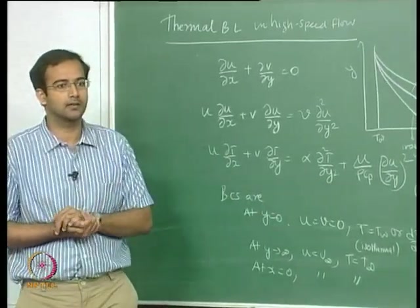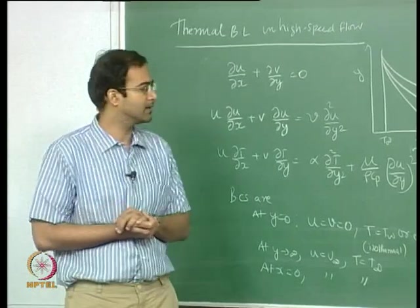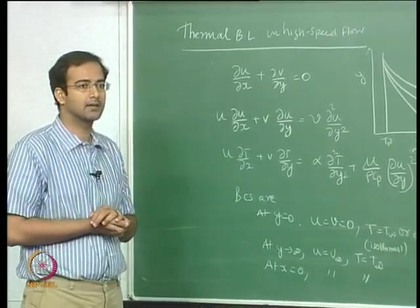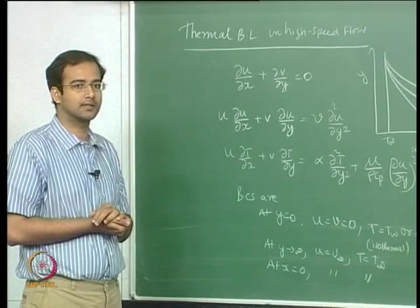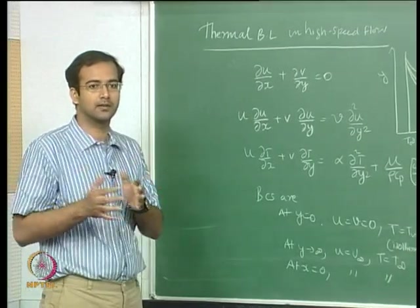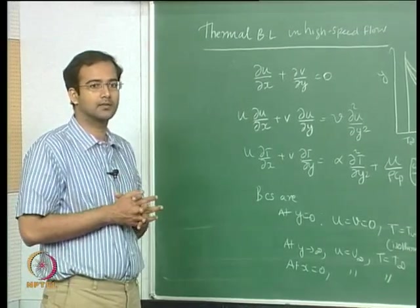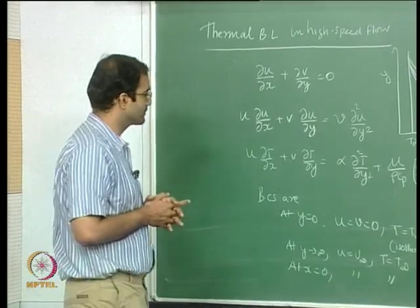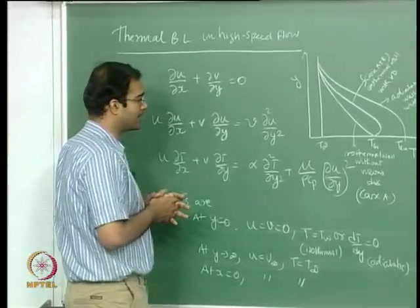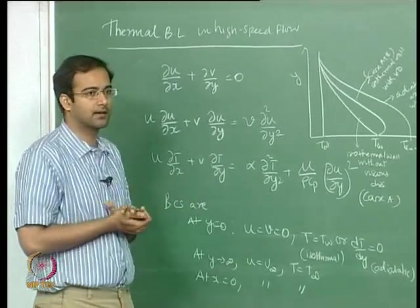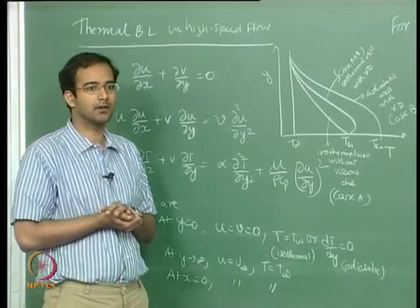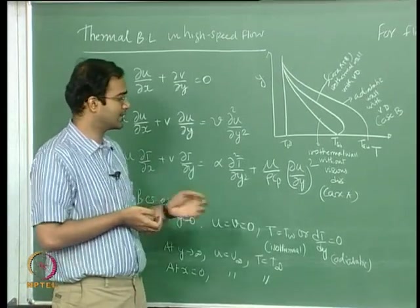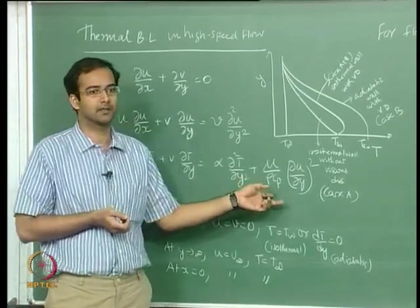We had also looked at some similarity solutions for flows with pressure gradient, but still the energy equation was the same throughout in all of these configurations. Now we want to consider a case where you can apply either Falkner-Skan flows for a wedge, or take a simple flat plate boundary layer, and see the effect of adding a viscous dissipation term.